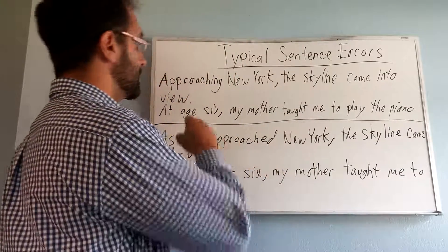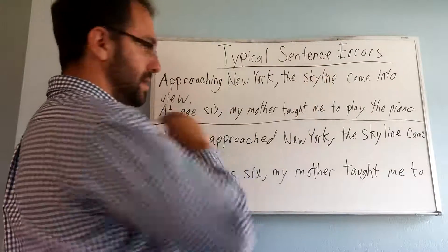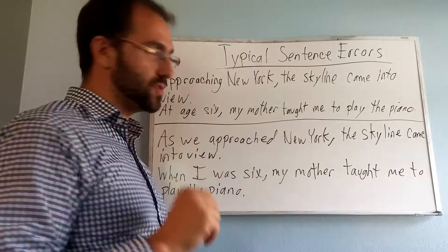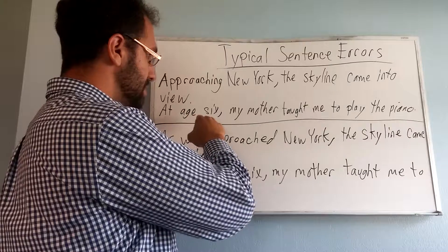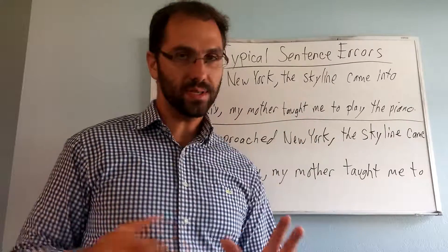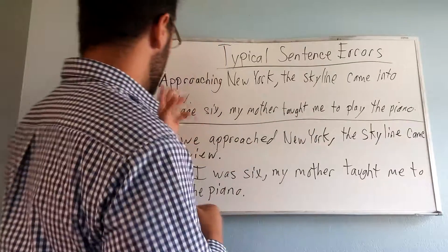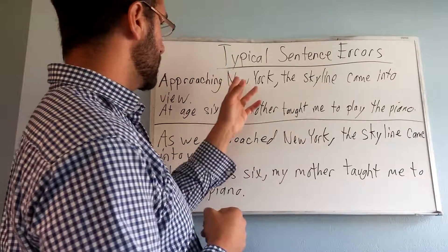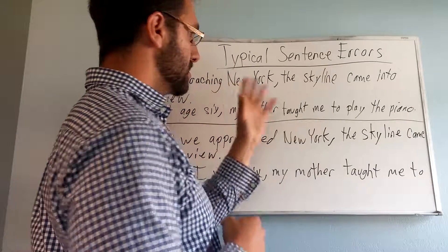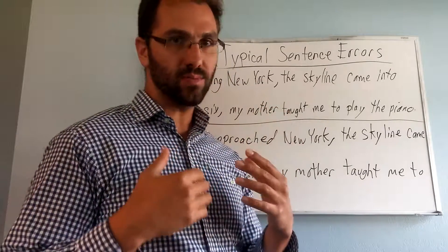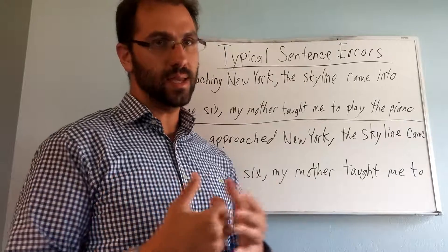For instance: 'Approaching New York, the skyline came into view,' or 'At age six, my mother taught me to play the piano.' From the beginning of a sentence like 'Approaching New York' or 'At age six,' it's hard to really anticipate what's going to come later in the sentence.